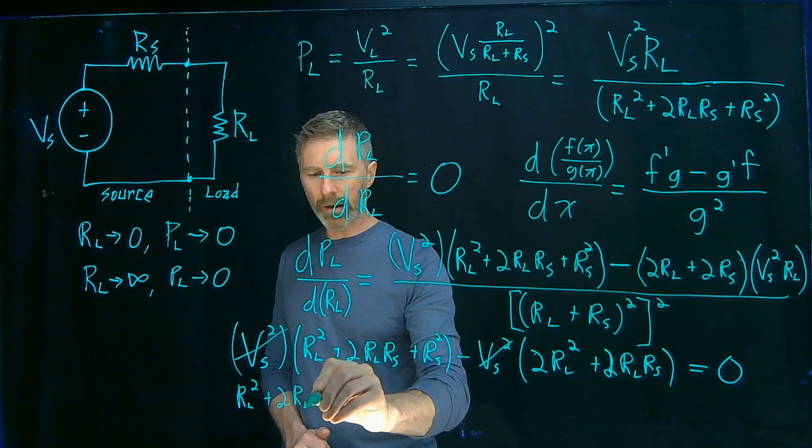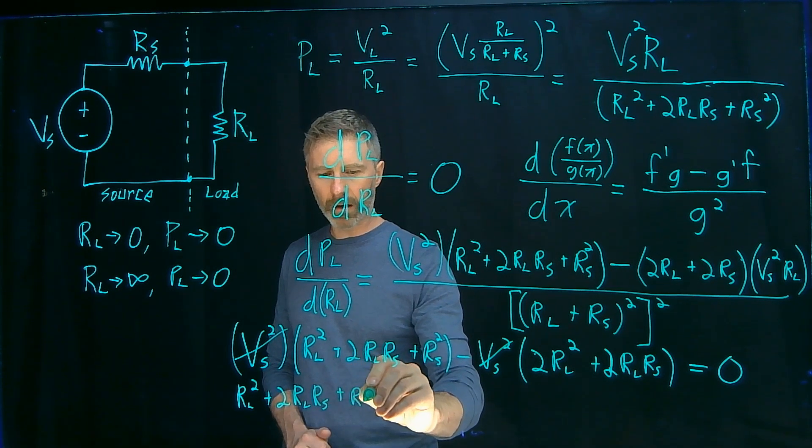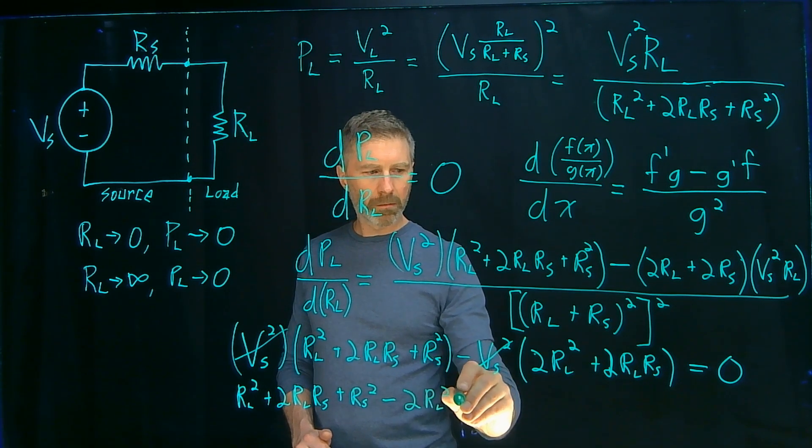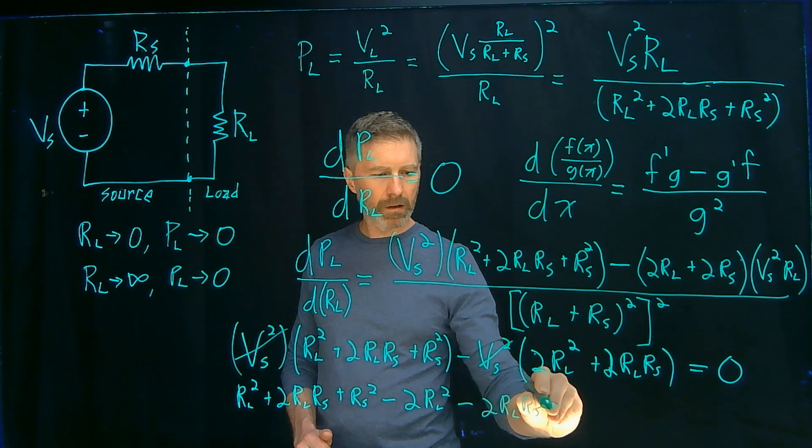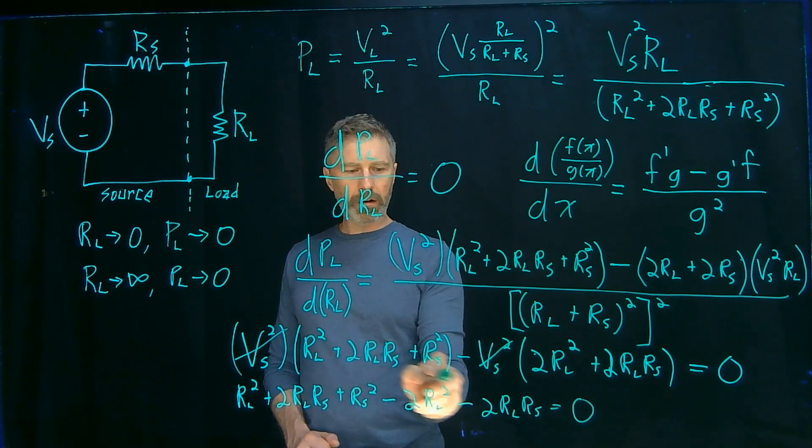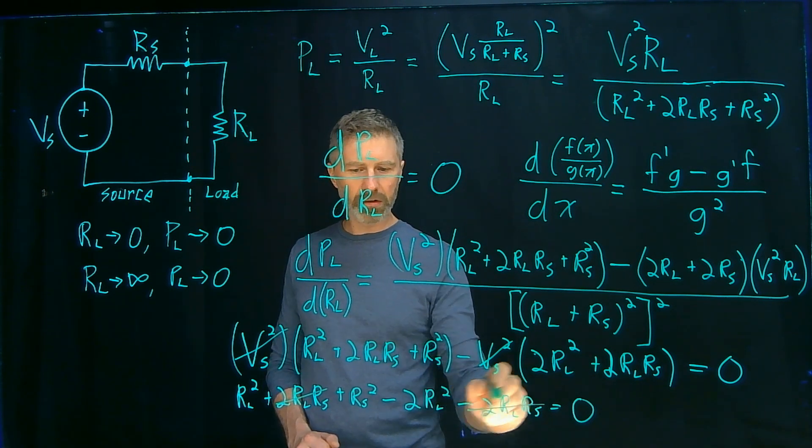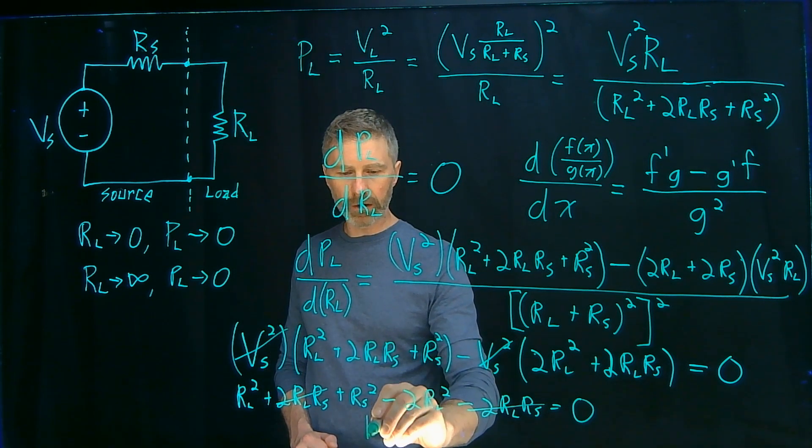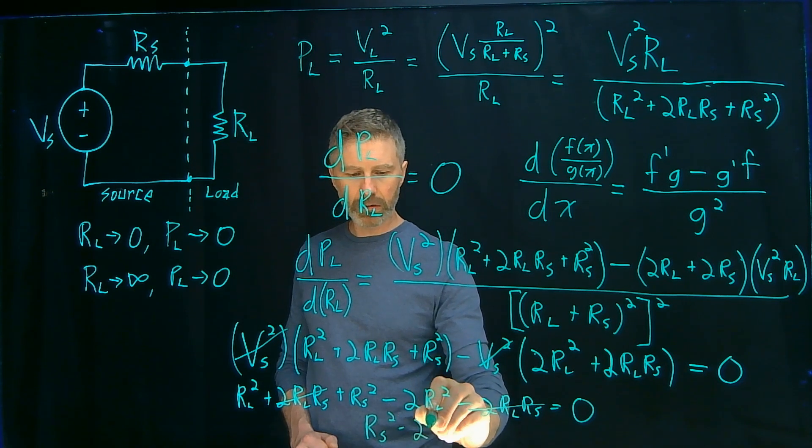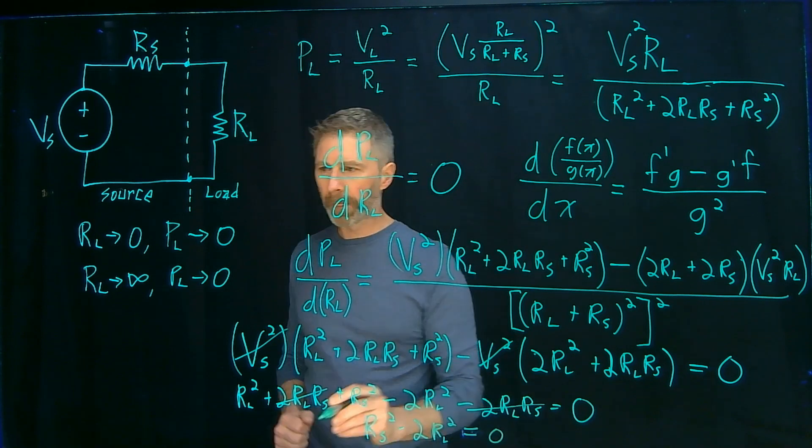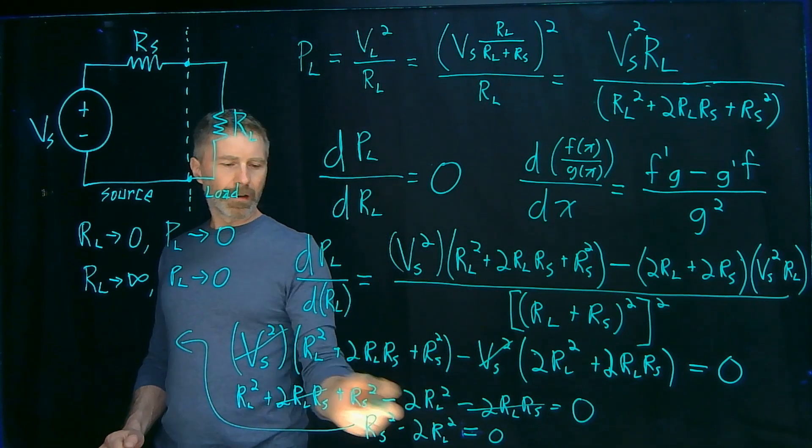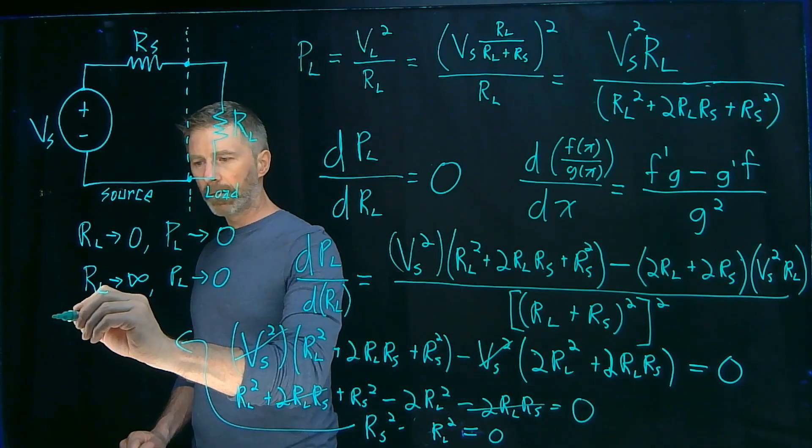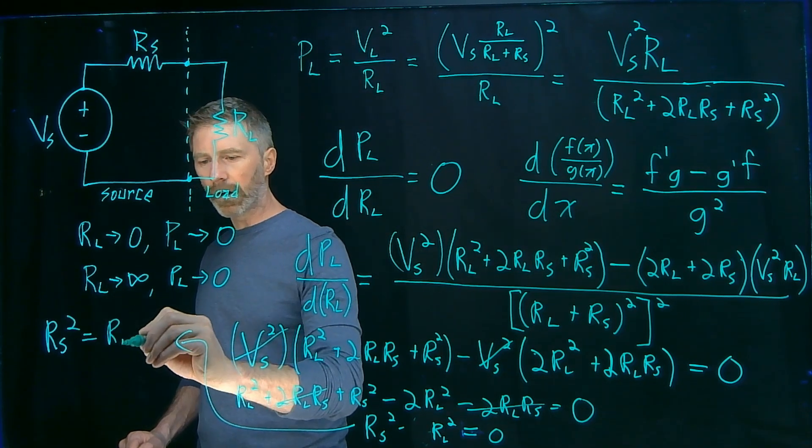RL squared plus 2RLRS plus RS squared minus 2RLRS equals zero. Look, I've got a 2RLRS and a minus 2RLRS, so those two go away. And then I've got an RL squared minus 2RL squared. So I end up with just a minus RL squared. So I've got RS squared minus RL squared equals zero. Well, let's go back. And that shouldn't be 2, that should just be 1.